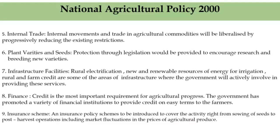The eighth feature is finance. Credit, as we know, is the most important requirement for agricultural progress. The government has promoted a variety of financial institutions to provide credit on easy terms to farmers. A good number of farmers, especially small and marginal ones, are yet to be brought within the reach of institutional finance. Efforts will be undertaken to bring this section under institutional finance through various schemes.